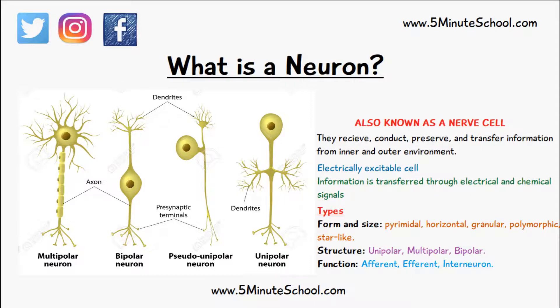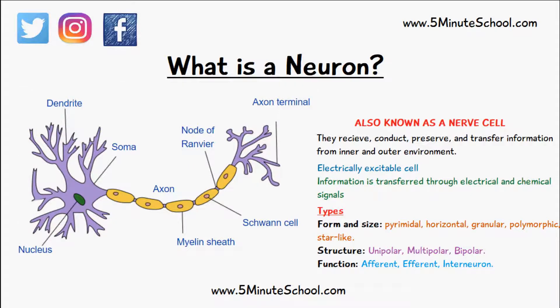When classifying neurons based on their function, they can either be afferent — so they're usually sensory and they're heading upwards towards the brain or the spinal cord.